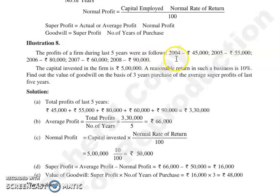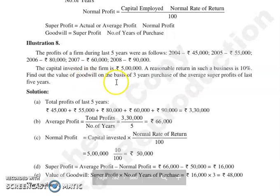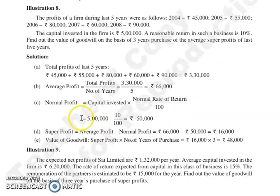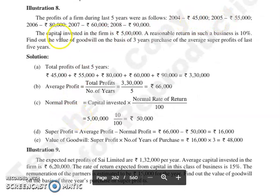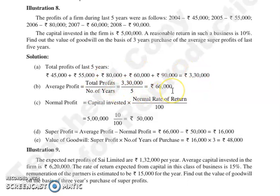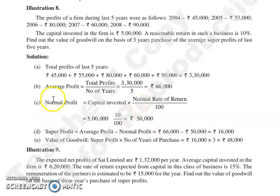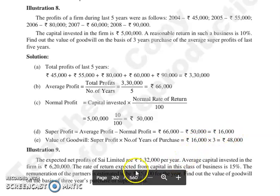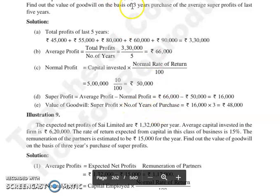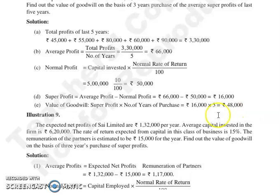Illustration 8: The profits of a firm for the last 5 years were given for 2004, 2005, 2006, 2007, and 2008. Capital invested in the firm is 5 lakh, and a reasonable rate of return in such a business is 10%. Find the value of goodwill on the basis of 3 years purchase of average super profits for the last 5 years. Average profit = total profit ÷ 5 = 66,000. Normal profit = 5,00,000 × 10% = 50,000. Super profit = 66,000 − 50,000 = 16,000. Goodwill = 16,000 × 3 = 48,000.